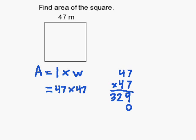Now we multiply the 4 times the 7 and get 28. And 4 times 4 is 16. Add the 2 is 18.